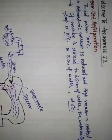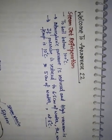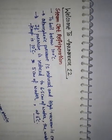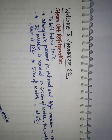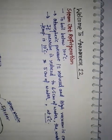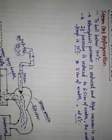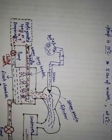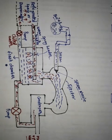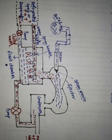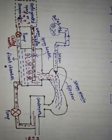The main principle of steam jet refrigeration is to boil the water below 100 degrees Celsius by reducing the pressure. In this video, we have learnt how the steam jet refrigeration process takes place and the main components of the steam jet refrigeration system.